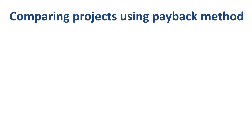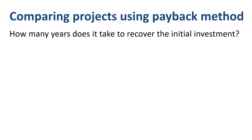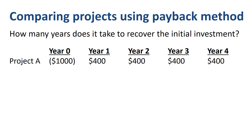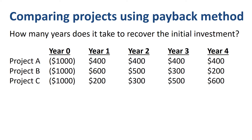What if we have multiple projects in our company that we want to force rank? We only have $1,000 of investment money to spend — which project is financially speaking the most attractive? In total, for the full 4 years combined, each of these 3 projects has $1,600 worth of cumulative benefits, but the timing of these benefits varies.